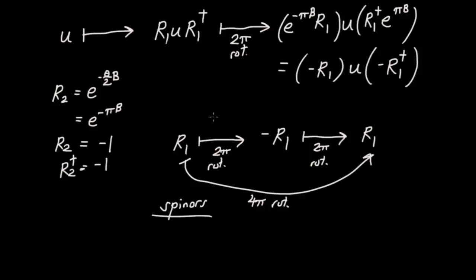Mathematical objects that are invariant under a 4π rotation but flip sign under a 2π rotation are called spinors. These objects require two full revolutions to return to their initial state. This is a neat result emerging from simple analysis of 3D rotations, and spinors are very useful both in applications and at the abstract level. That wraps it up for this video — thanks for watching.